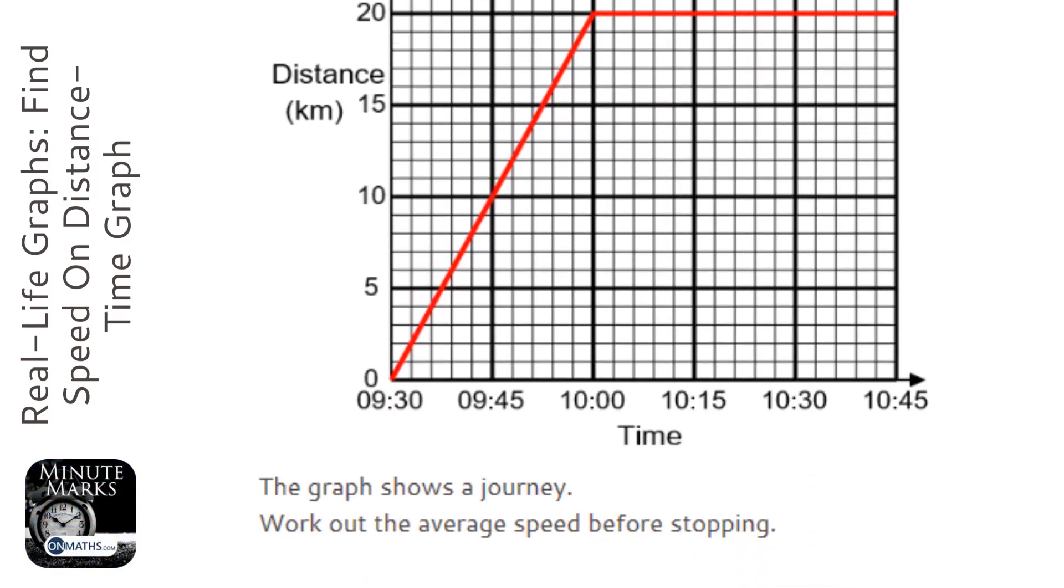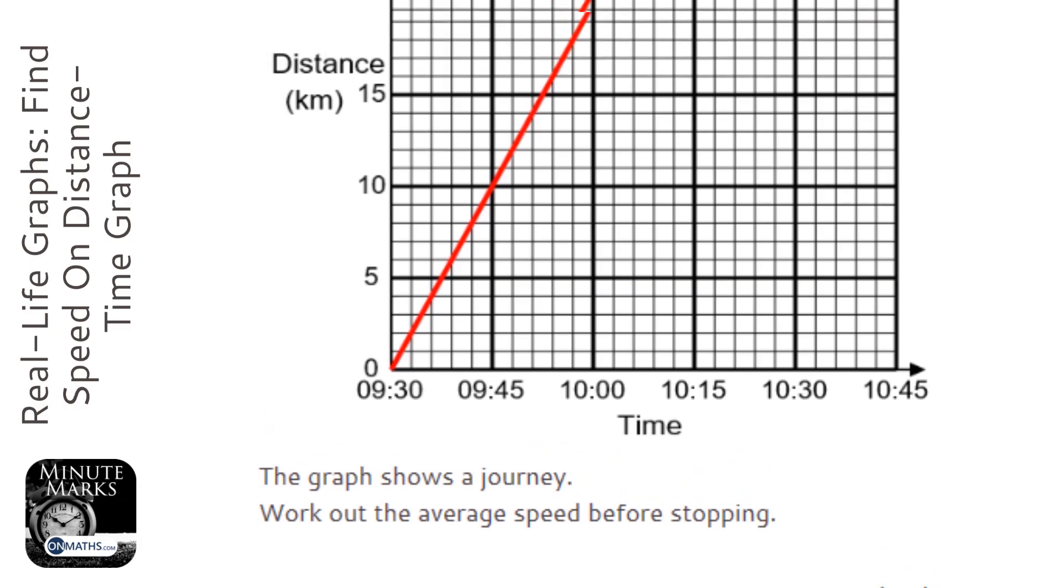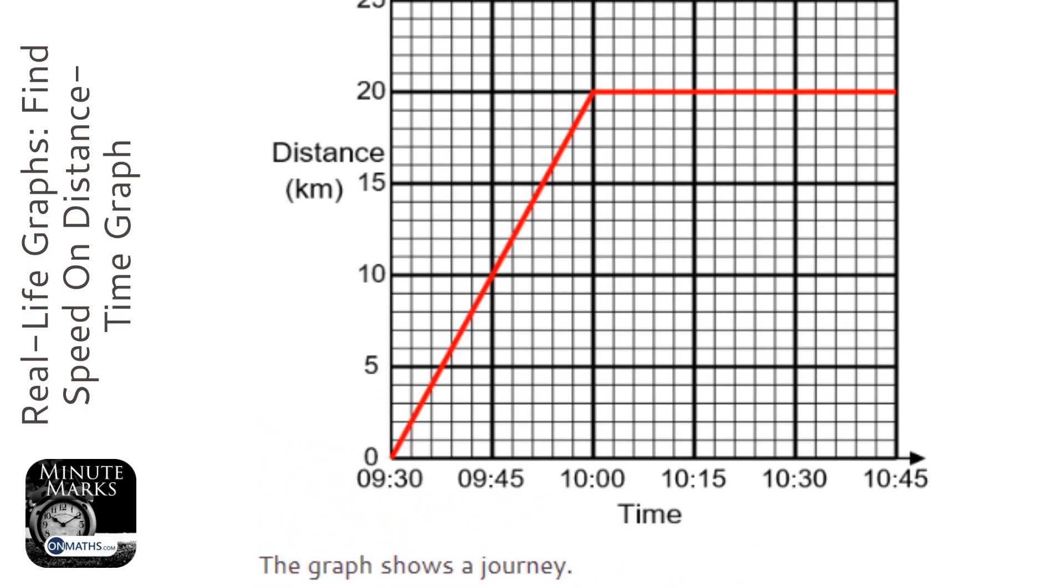Okay, so we've got a distance-time graph and we're asked for the average speed before stopping. So the first thing we need to work out is when we stopped. We obviously stopped when the distance became constant. So when the gradient of the graph is zero, that means that we've stopped on a distance-time graph.